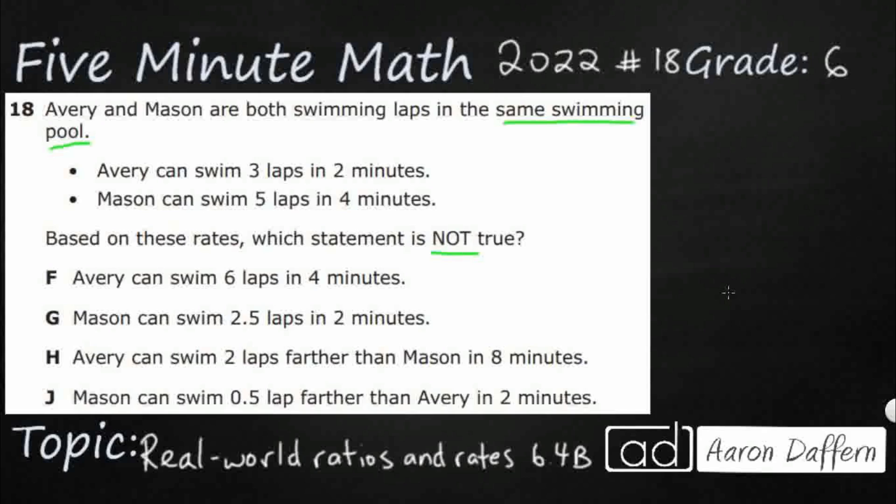Let's see if we can put these into, since it looks like 3 laps in 2 minutes, this looks like ratios. Let's go ahead and put those into fractional form, a little bit easier. 3 laps in 2 minutes. And then we've got Mason, 5 laps, more laps, but it's longer. So it's going to be kind of hard to compare those two, but we probably will end up doing that.